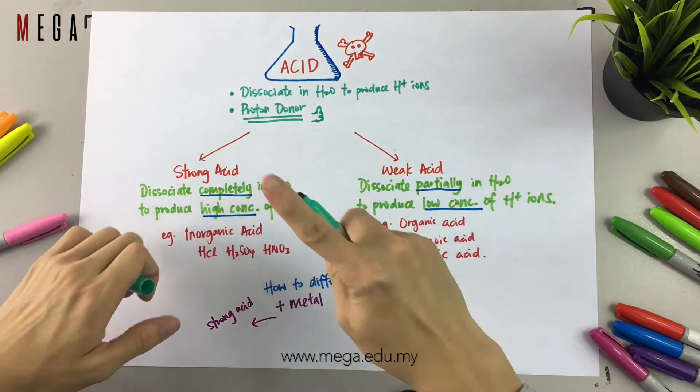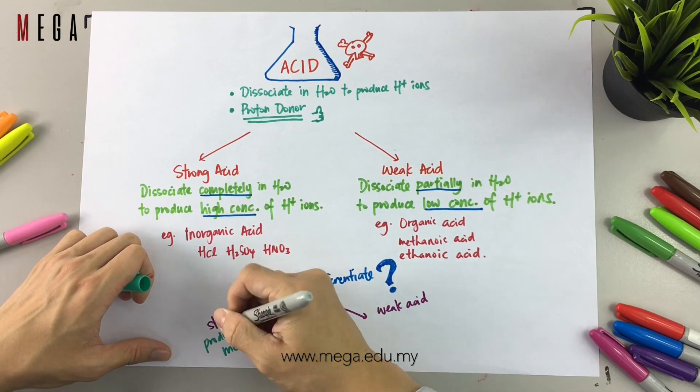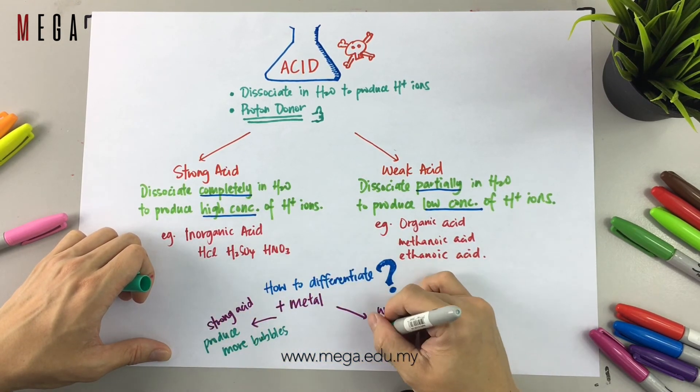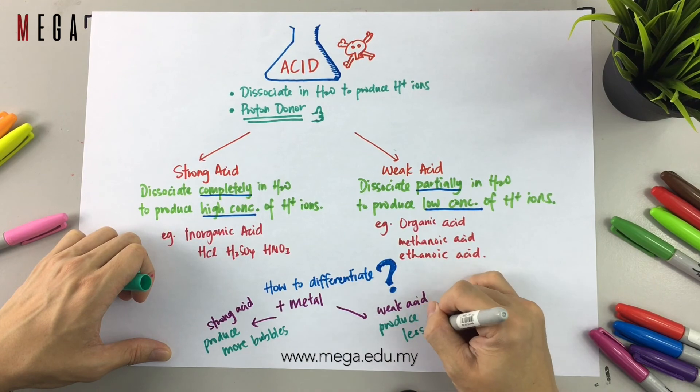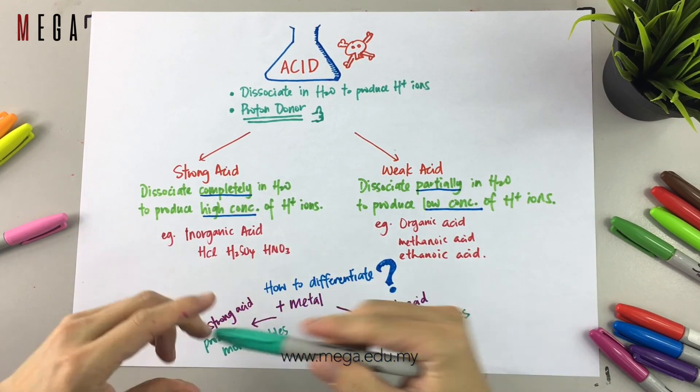Strong acid with metals will produce more hydrogen gas, therefore it produces more bubbles. If it is weak acid, it produces less bubbles. That's all. Thanks!